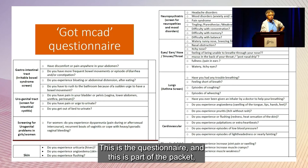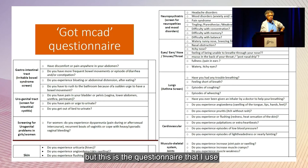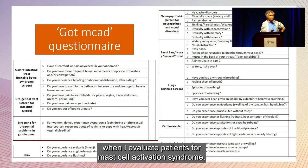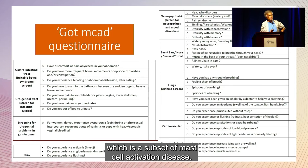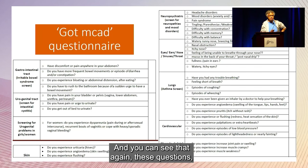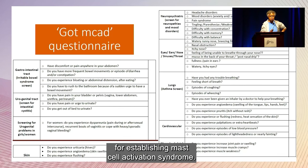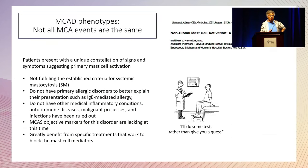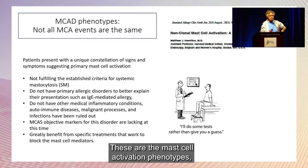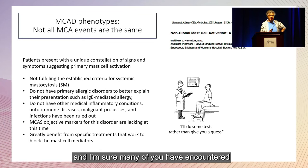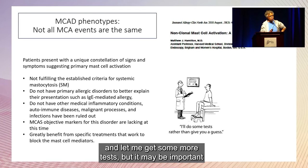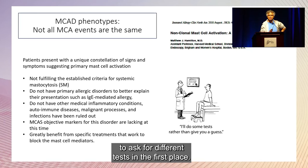There's a questionnaire used when evaluating patients for mast cell activation syndrome, which is a subset of mast cell activation disease. If you just check off a couple of boxes, you're already meeting one of the important criteria for establishing mast cell activation syndrome. Many people encounter a 'normal tryptase' result. You're lucky if your doctor says, 'I don't know — let me get some more tests.' It may be important to ask for different tests in the first place.